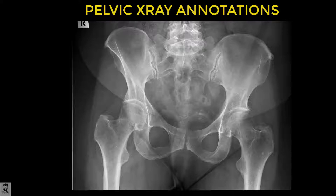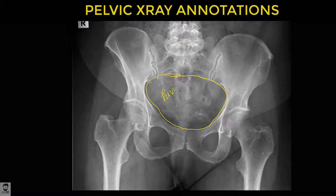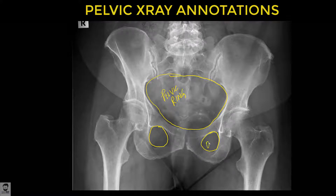The first thing to identify is the pelvic rings — this here is the main pelvic ring. Next, we identify the two obturator foramina: this is one obturator foramen, and this is the second obturator foramen.